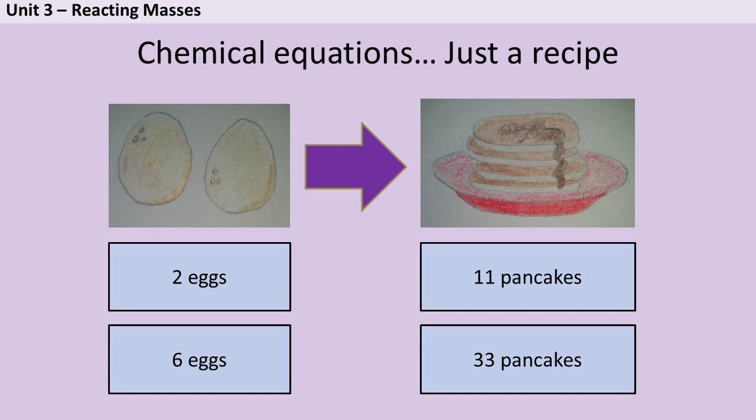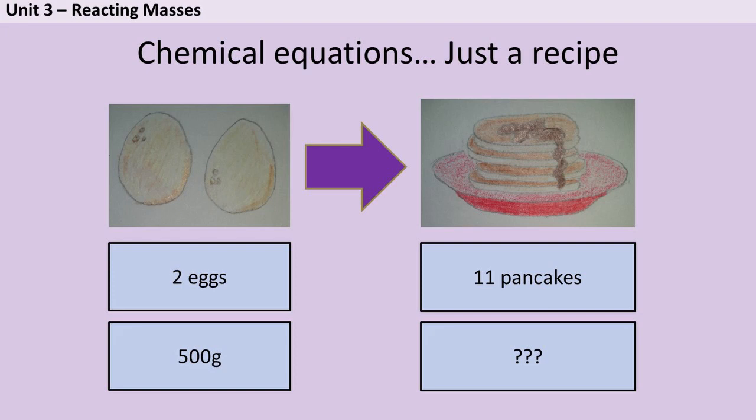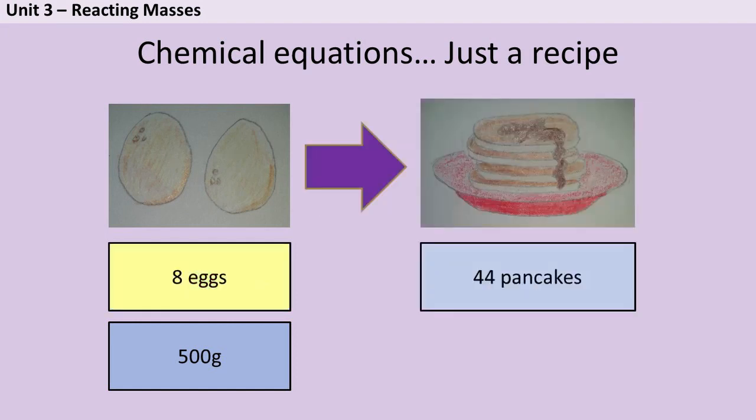But let's say I was really unhelpful and I told you I would give you 500 grams of eggs. Well first of all you would need to convert that into a format you could actually use with your recipe. I can't just use the ratio 2 to 11 straight away because then I'd be making nearly 3,000 pancakes and clearly that's not right. But if you knew that an egg weighed 62.5 grams you could do 500 grams divided by 62.5 grams to find out I was actually giving you eight eggs, and then we can go back to our ratio 2 to 11 and you could just use it and find out we would make 44 pancakes.